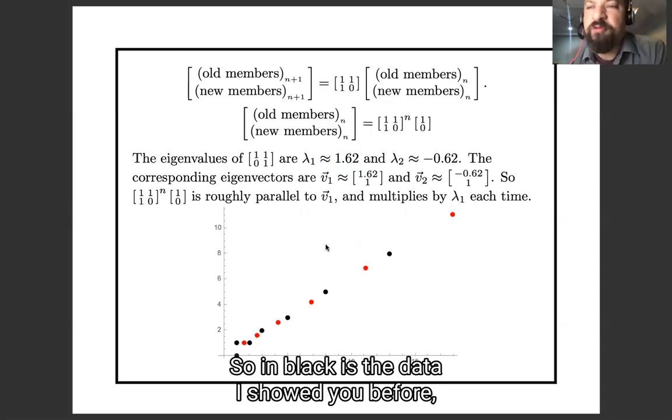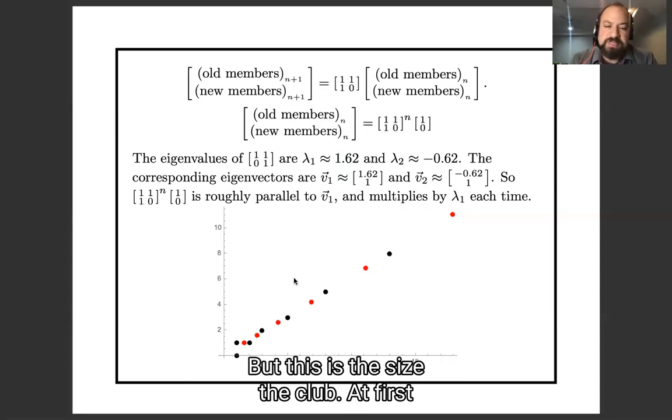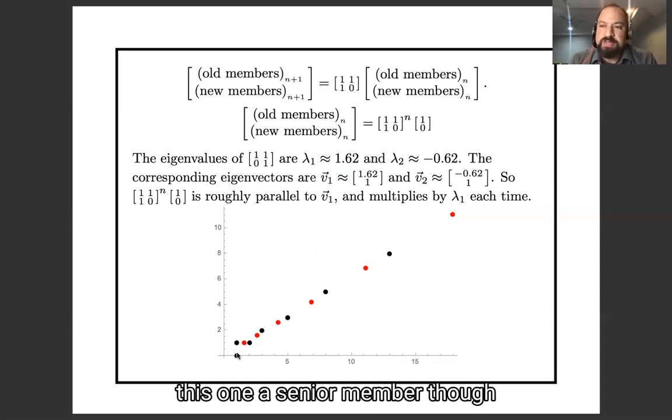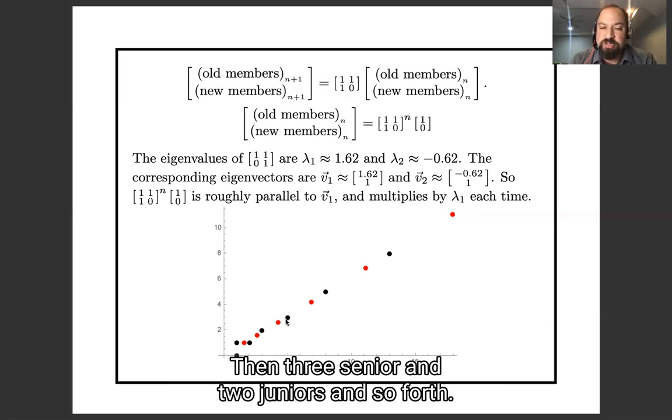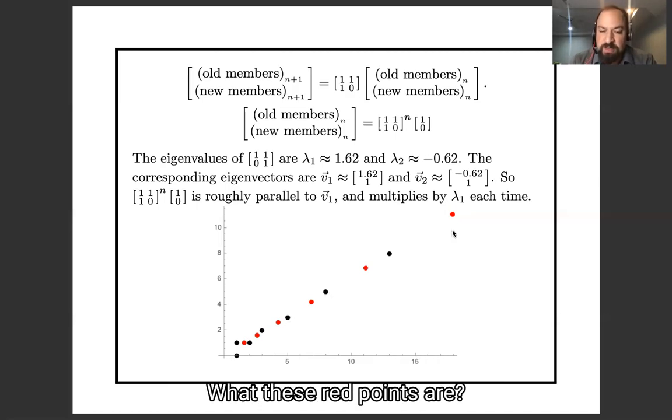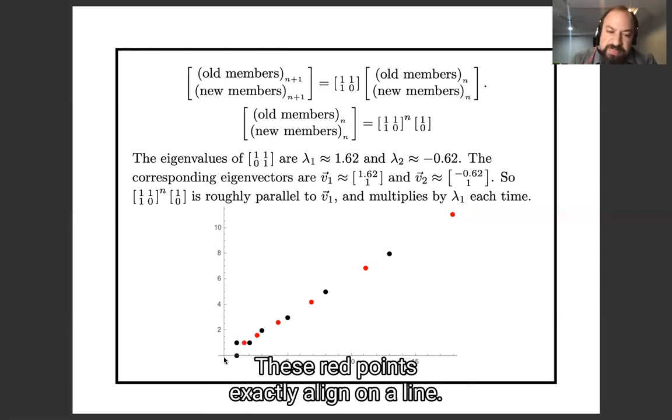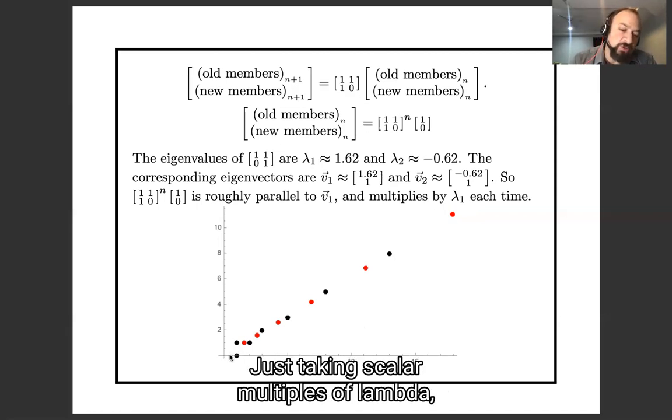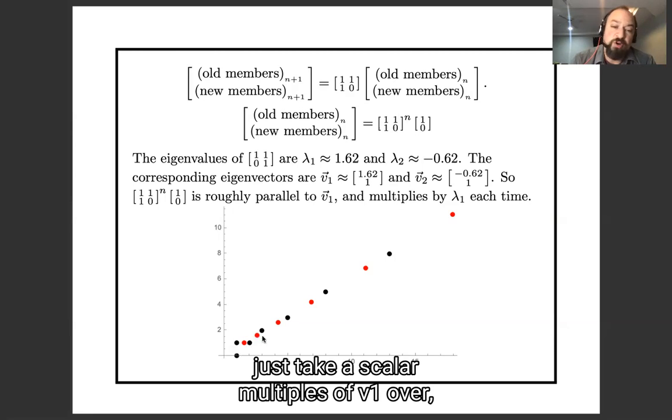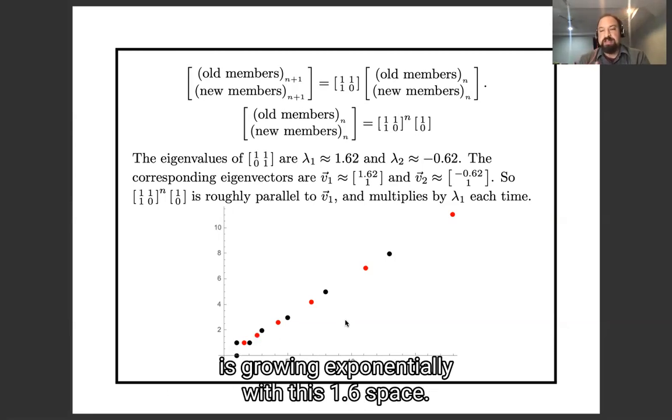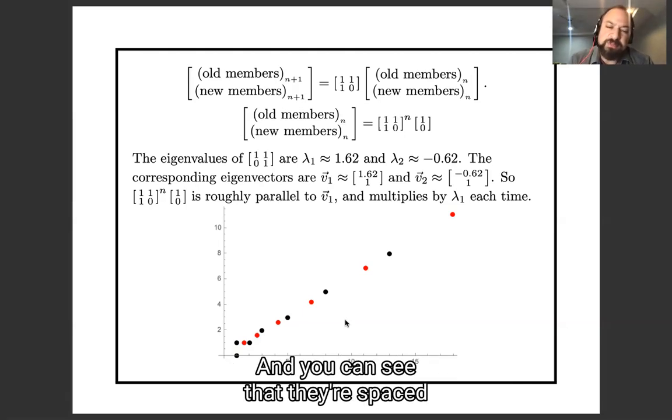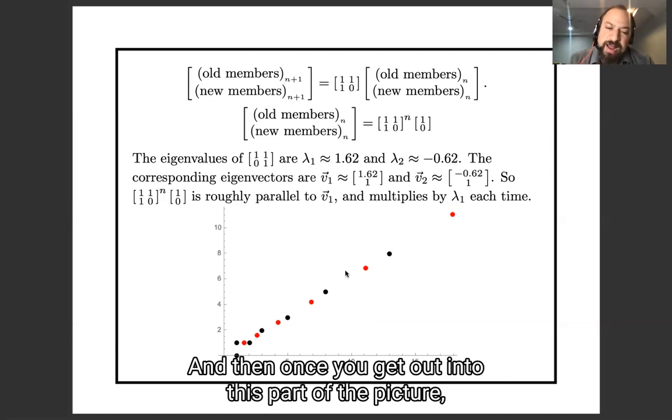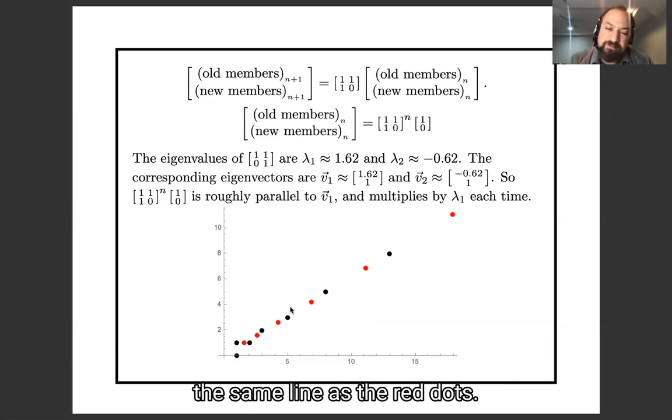In black is the data I showed you before, except it's more zoomed in to help you see clearer. This is the size of the club. At first, there's one senior member, no junior members, then one of each, then two senior and one junior, then three senior and two junior, and so forth. That's what these black points are. What these red points are—these red points exactly lie on a line. These red points are the vector v₁, λ₁v₁, λ₁²v₁, and so forth, just taking scalar multiples of v₁ over and over, where the scalar multiple is going exponentially with this 1.6 base. You can see that they're spaced out in the same kind of way, and that once you get out into this part of the picture, the black dots look like they're on the same line as the red dots.